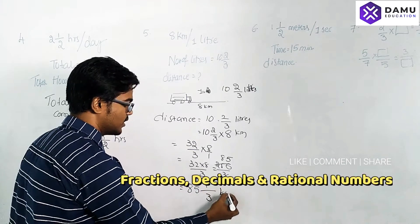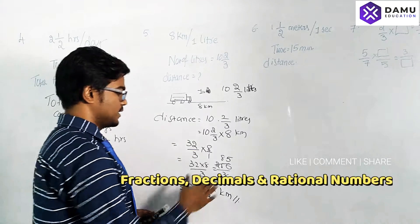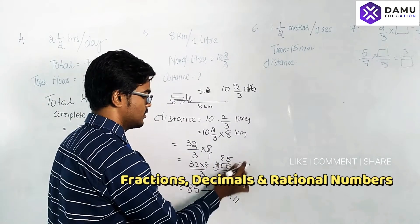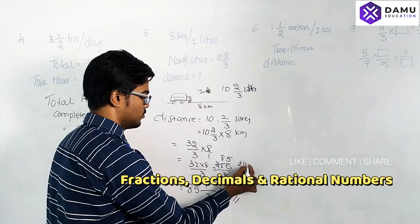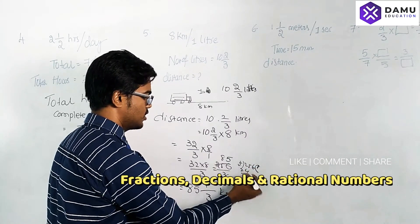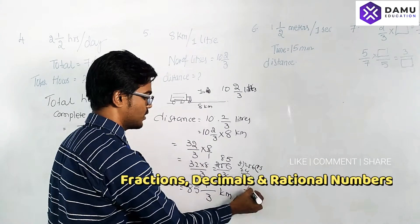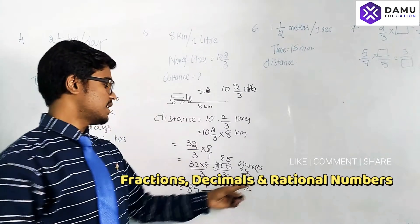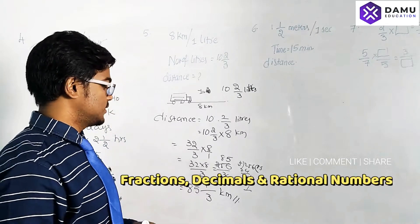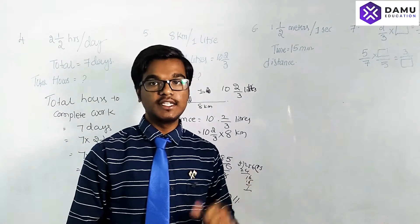So the truck will travel 85 and 1/3 kilometers with 10⅔ liters of petrol. That is the distance it can travel.